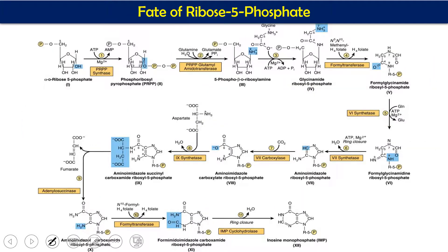Ribose-5-phosphate is one of the main substrates for purine synthesis. Ribose-5-phosphate combines and gives us PRPP. After further steps, this gives us IMP, and IMP is converted to GMP and AMP — purine nucleotides. So ribose-5-phosphate obtained from the hexose monophosphate shunt is converted into different purine nucleotides.